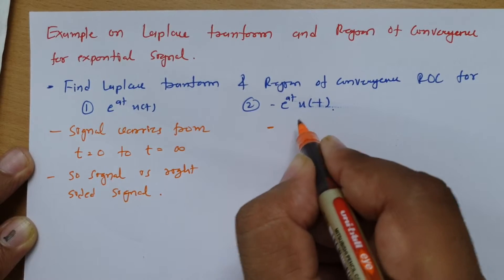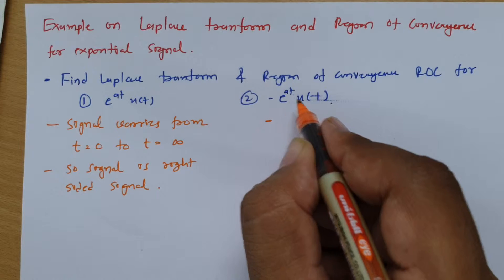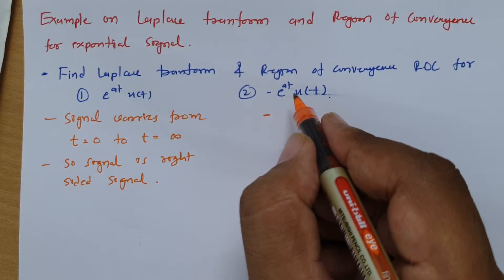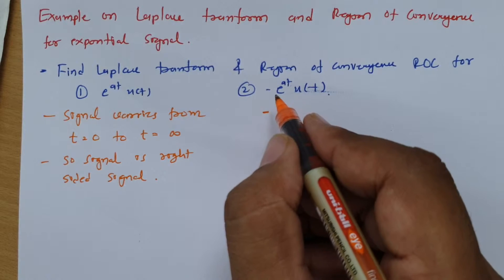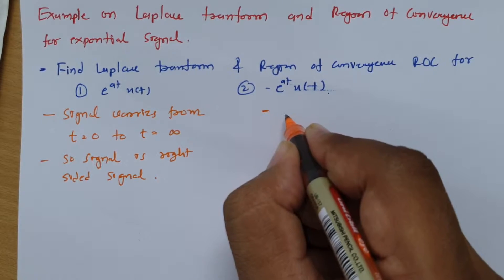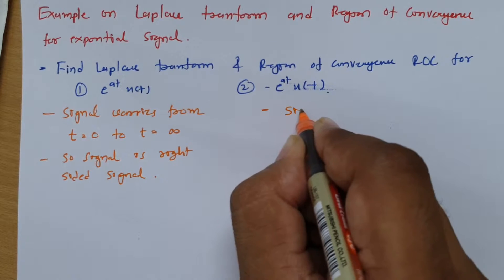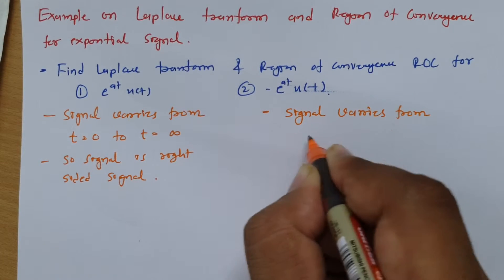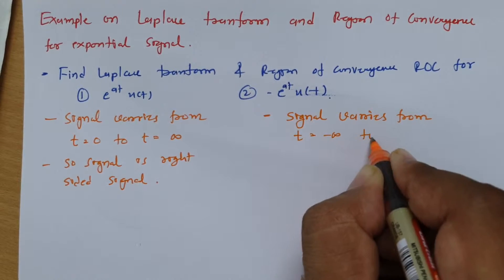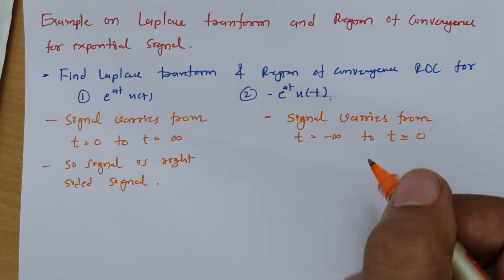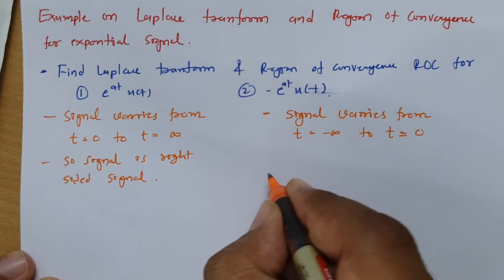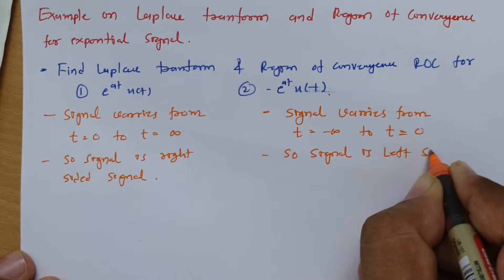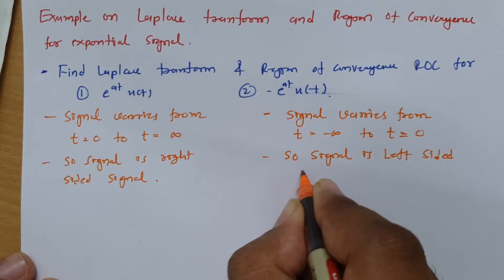Now, for the second signal, minus of e to the power at times u(minus t), this signal starts from 0 and goes towards minus infinity. So the signal varies from t equals minus infinity to t equals 0, which means this signal is a left-sided signal.